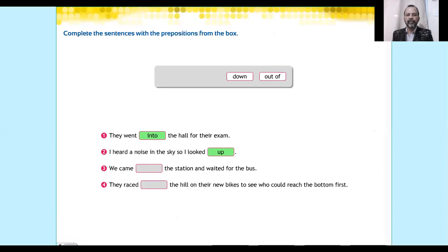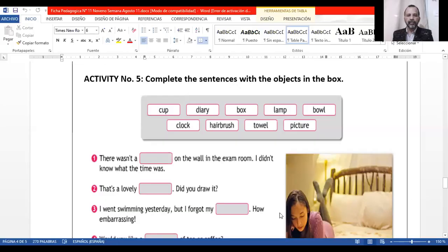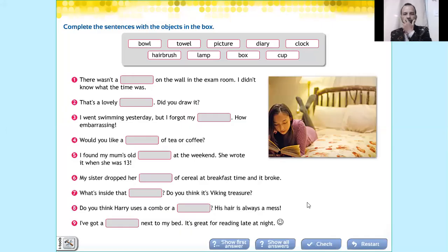Finally, we have activity number five. This is complete the sentences with the objects in the box. Let me share the screen one more time so you can see two examples.